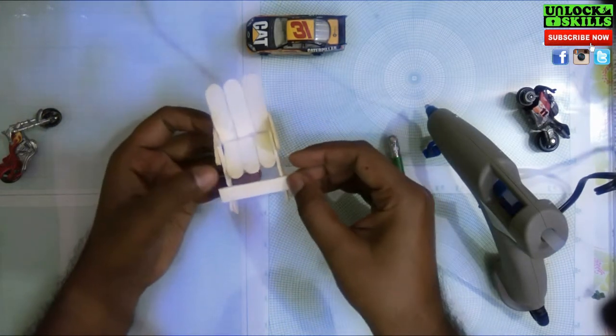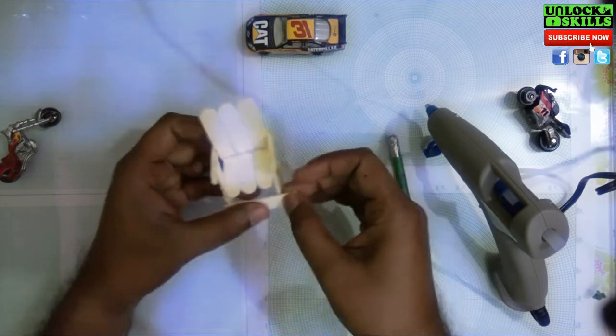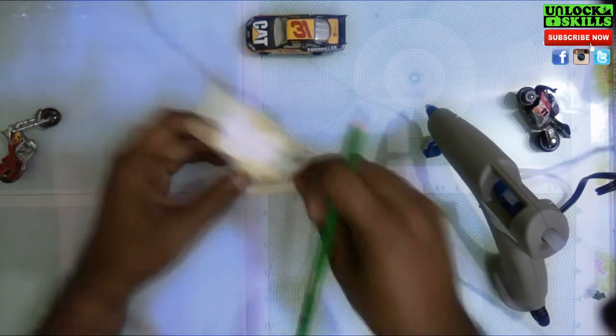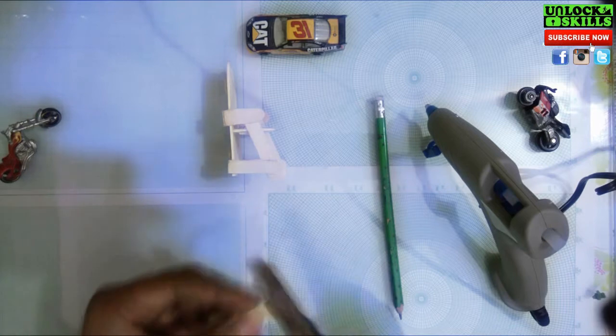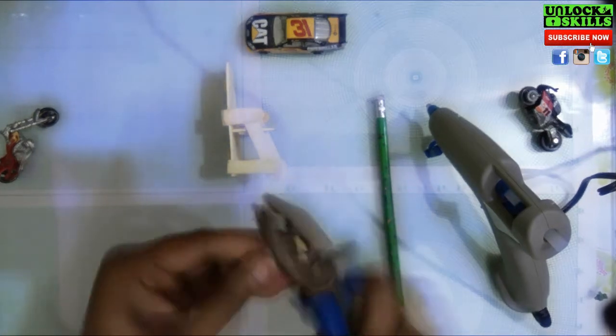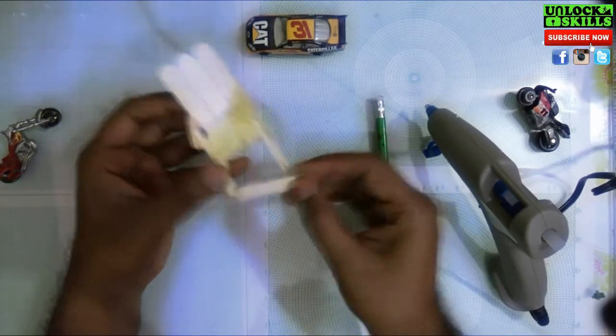I later noticed that the front side also requires a brace, so out of the scrapped popsicle sticks what I have thrown off, I took one and then marked it by pencil and then stuck it in front. You can also try the same method.